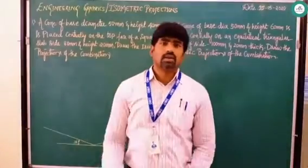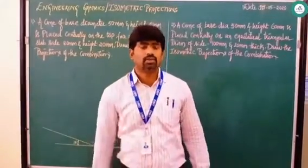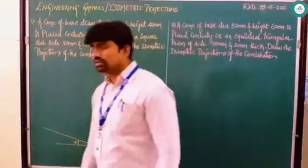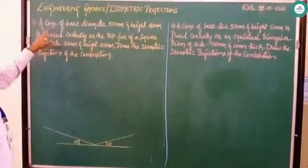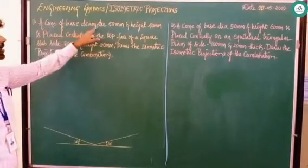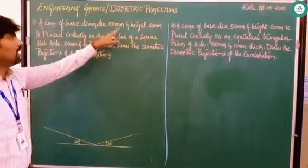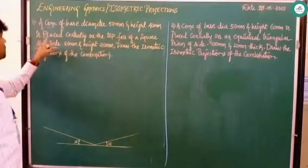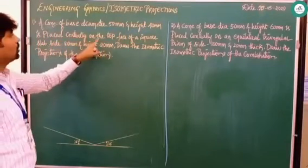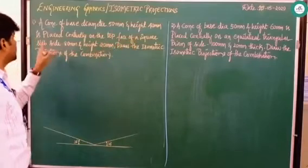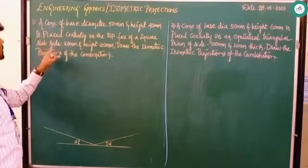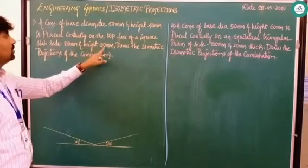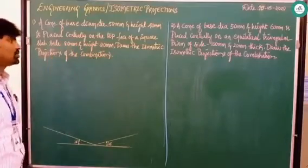Today we will solve a basic problem in isometric projection. Coming to the first question: a cone of base diameter 50 mm and height 40 mm is placed centrally on the top of a square slab, side 80 mm and height 20 mm. Draw the isometric projection.